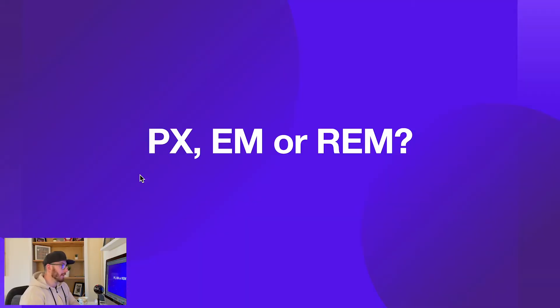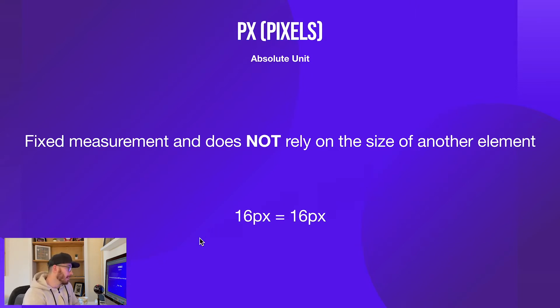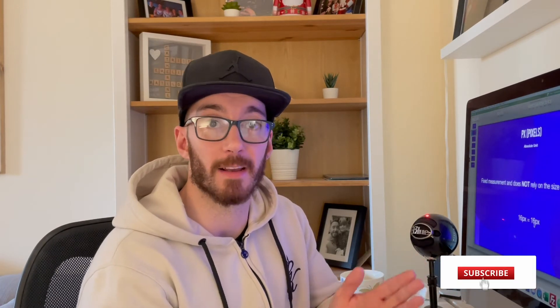So first off let's discuss pixels. You're probably well aware what pixels are, but essentially pixels are an absolute unit. They are fixed size and do not rely on the size of any other elements within the website. If you define 16 pixels it's always going to be 16 pixels — nothing changes. This also goes for containers, so if you had a window width of 200 pixels but a container of 100 pixels, that container is always going to be 100 pixels unless you specify it otherwise.